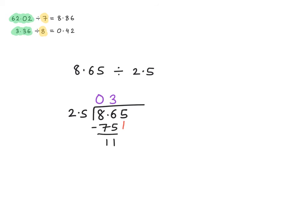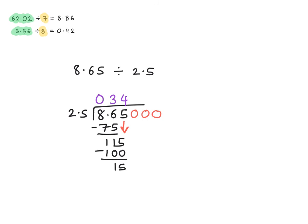And then we bring this 5 down here. And then we ask ourselves: how many 25s go into 115? Well clearly in 115 there are 4 lots of 25, because 25 times 4 is 100. And the remainder — 115 minus 100 — is clearly 15. Now you'll notice that I don't have any digits to bring down. Remember that in decimal numbers I can write as many zeros as I want — it does not change the answer or even change the number. So I need to bring one of these zeros down here.